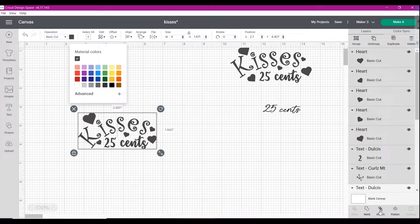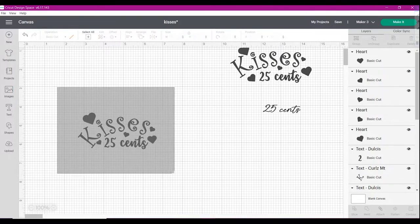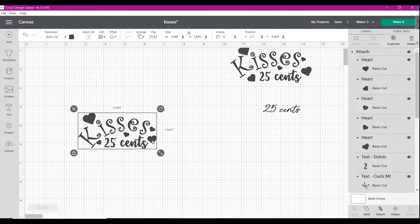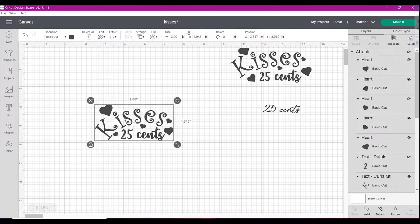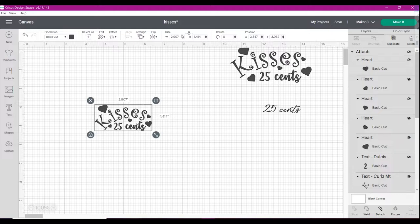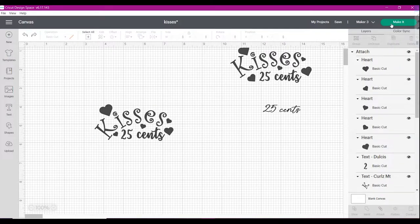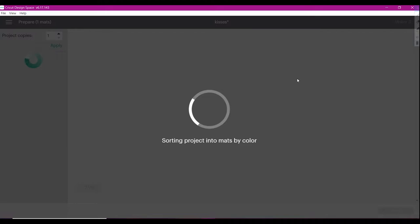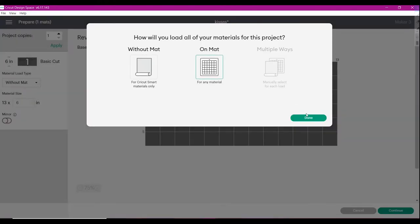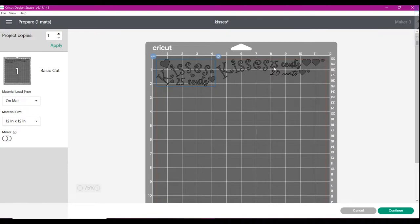Then you will also want to come over here to select everything and hit attach. And that way it'll move as one unit. It'll be resized as one unit. And then when you go to make it, it'll be all one. So see this one here was not attached so everything's separate and cut separate. This one I attached so it all moves together as one unit. And you don't have to worry about the placement when you go to transfer it.